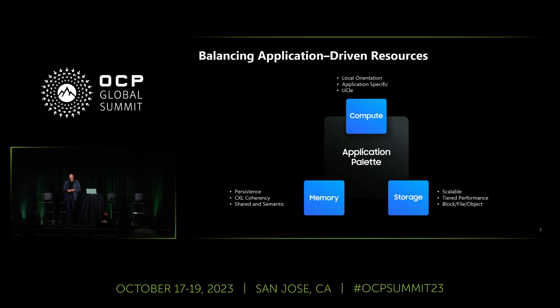Samsung is taking a leadership opportunity to enable that type of solution. CXL coherency provides both shared and semantic attributes. Storage still needs to be available — not only as a last-level cache for memory tiering, but also scalable to support block, file, and object storage.